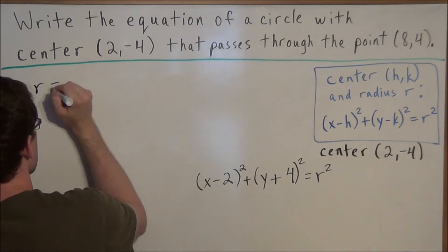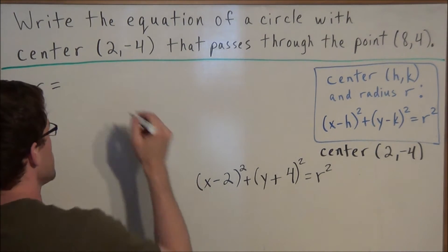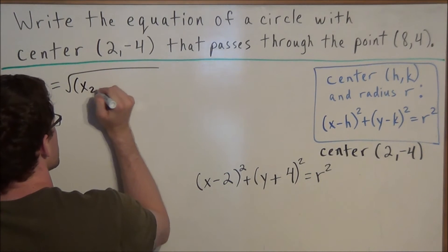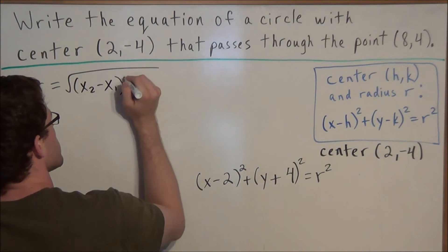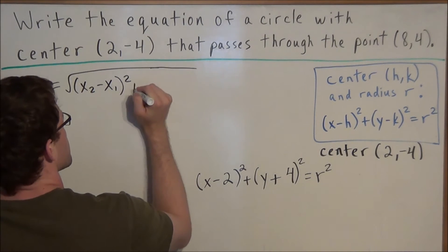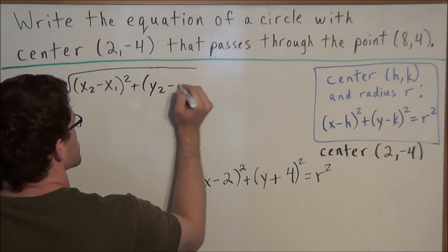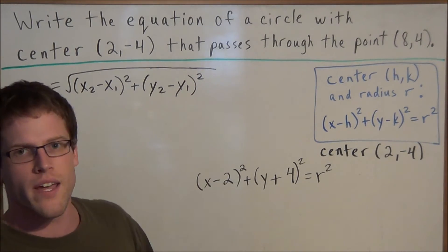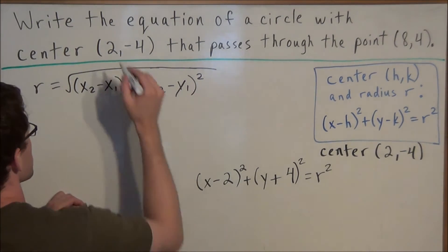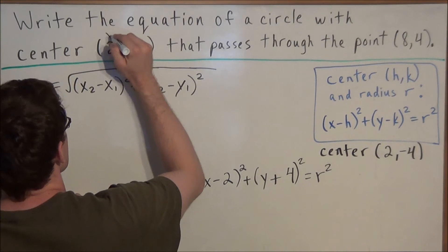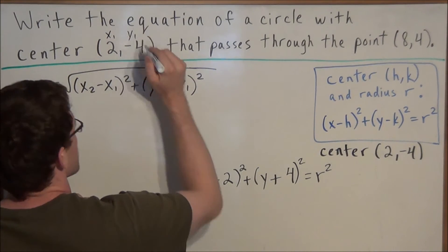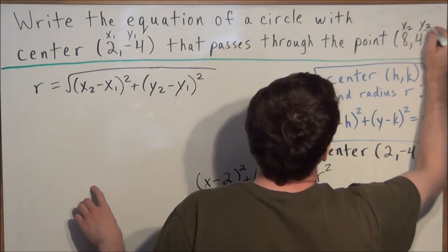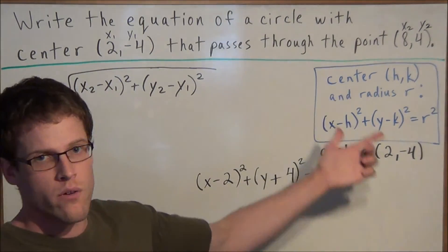And instead of using D I'm going to use R to represent the radius. But it's equal to the square root of, and if you remember the equation, it's X2 minus X1 squared, plus Y2 minus Y1 squared. So then really all you need to do is just define X1 Y1 and X2 Y2. So in the beginning of the problem we could say that the center is our X1 Y1. And this point could be our X2 Y2. So all we have to do now is just plug in.